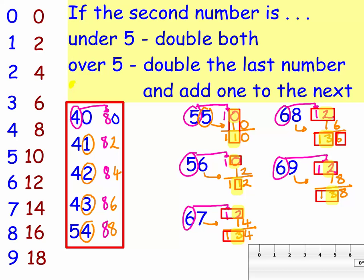Great. Welcome back. There's the answers you should have got. All of these ones in the first column, highlighted with a red box, that last number is under 5, so you can just double both and put them side by side.